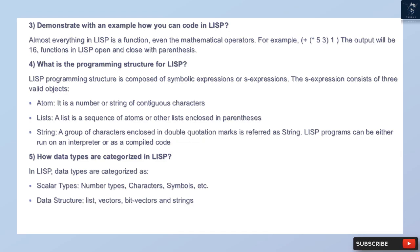Question 4: What is the programming structure for Lisp? Lisp programming structure is composed of symbolic expressions or S-expressions. The S-expression consists of three valid objects: Atom — a number or string of contiguous characters; List — a sequence of atoms or other lists enclosed in parentheses; and String — a group of characters enclosed in double quotation marks. Lisp programs can be either run on an interpreter or as compiled code.